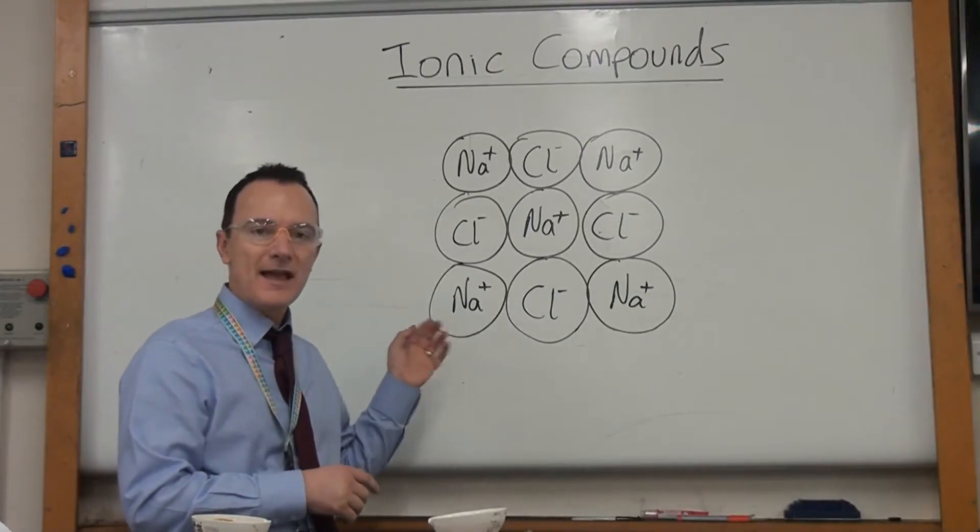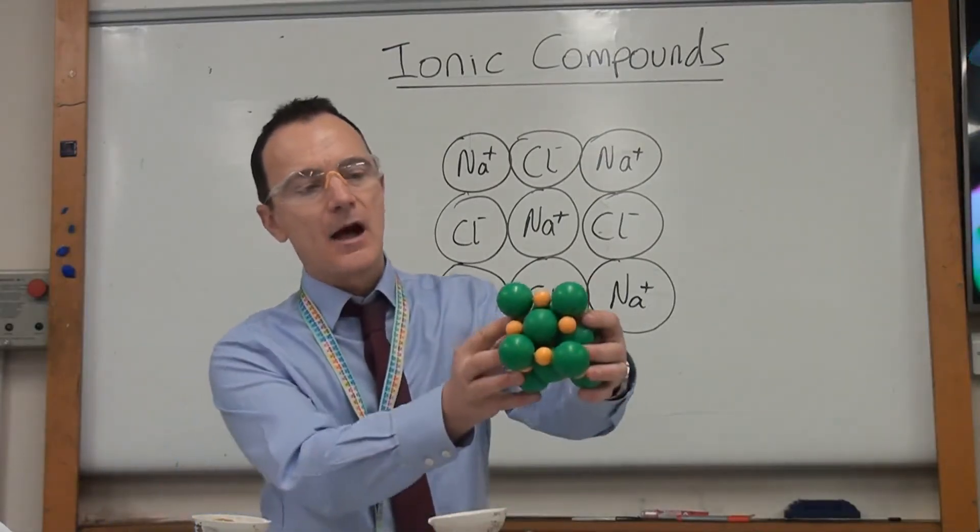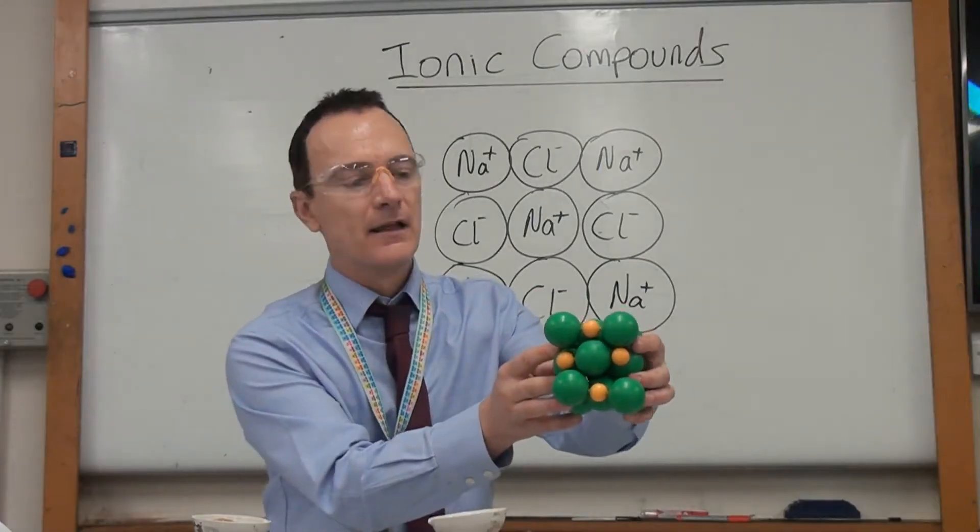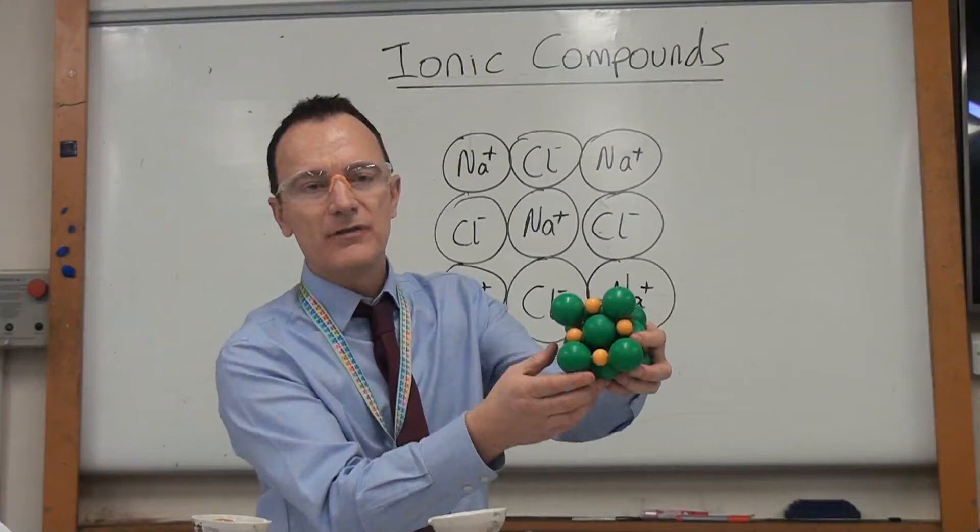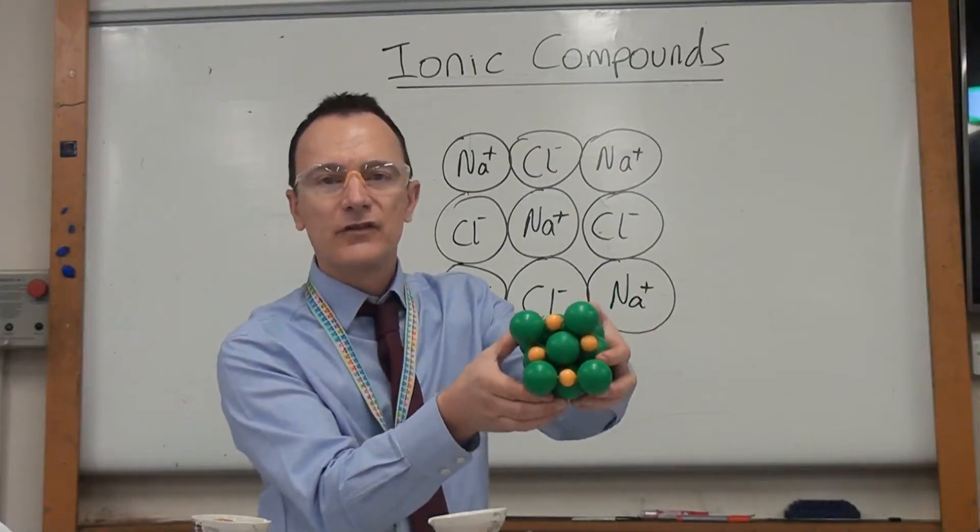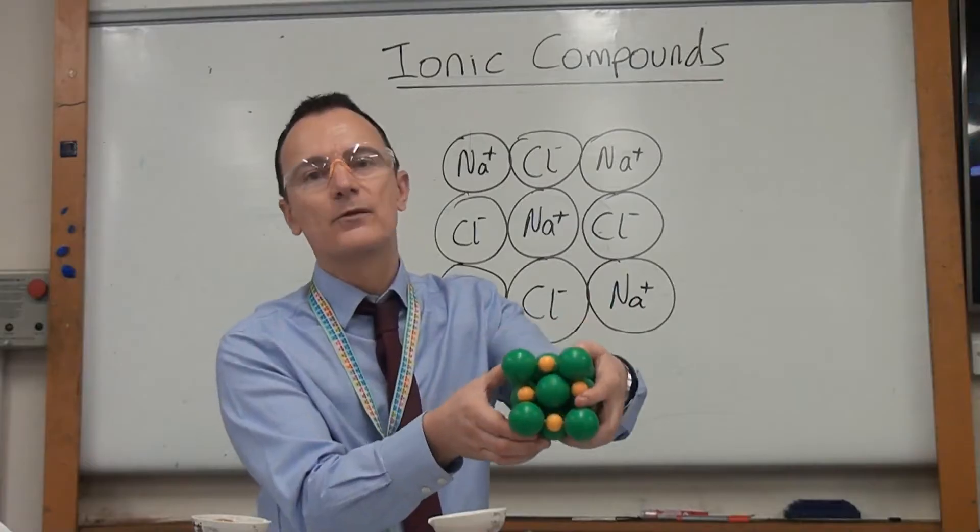And we must remember that the ions would be in a 3D structure like this and we call this an ionic lattice. This regular arrangement of ions in neat rows in three dimensions, that's called a giant ionic lattice. And in practice that would be made of thousands of ions.